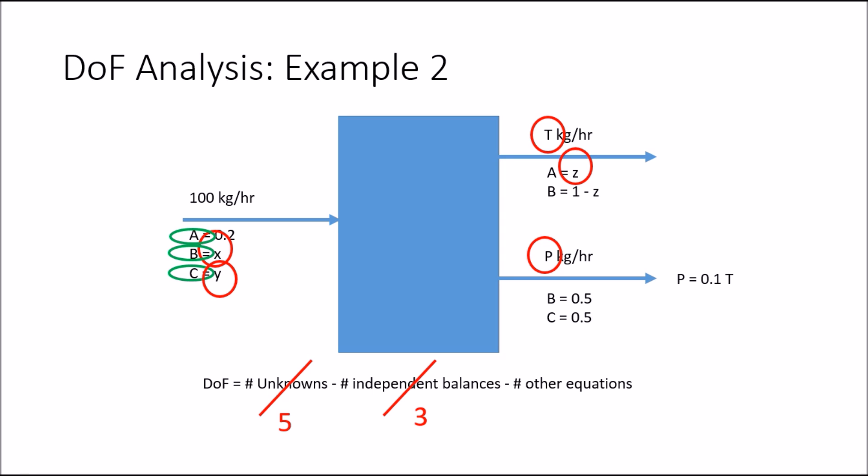However, we have some additional information we can use. On the right-hand side we can see an equation relating two of the flow rates: P equals 0.1 times T. This is not a material balance equation, but it relates two variables and is independent from all the balances. Accounting for this one additional equation leaves us with one degree of freedom remaining.